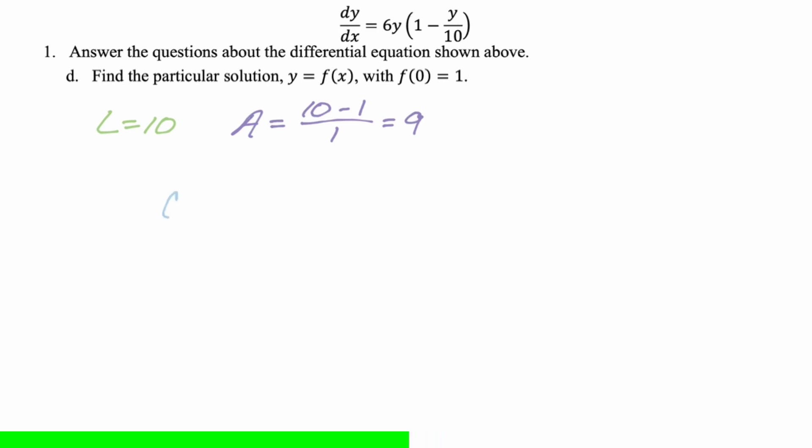F of x is L, which is 10, over one plus A, which is nine, e to the negative, and then k is the coefficient of that leading y. So the form of the differential equation is really important. It's going to be k times y quantity one minus y over L. Memorize that. So in this case, it's six, so six, and then x. That's our solution.